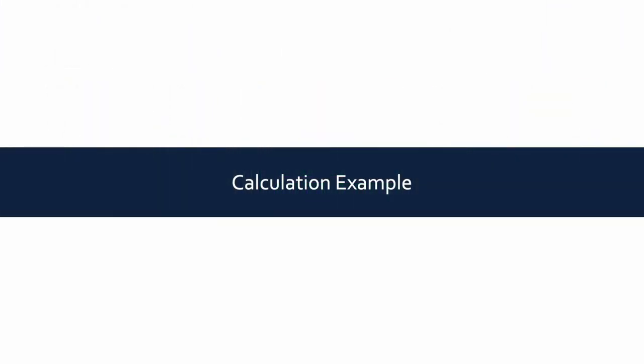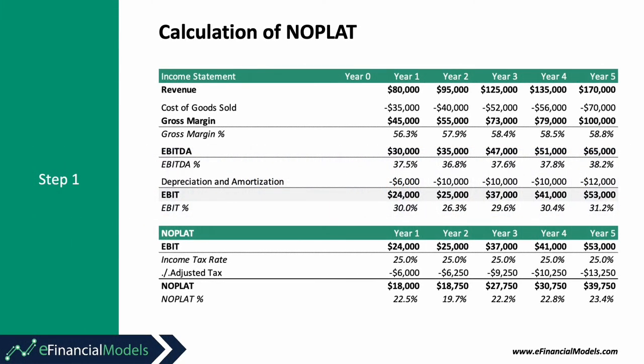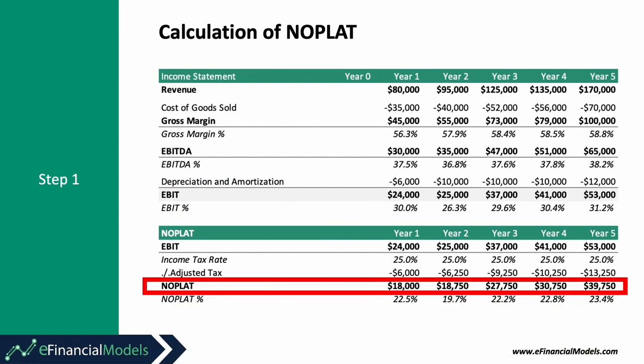Let's look at an illustrative calculation example taken from a company's income statement and balance sheet to better understand how to calculate and use ROIC. First, we need to calculate NOPLAT. For this, we need to extract EBIT from the income statement and deduct pro forma income taxes using the income tax rate. This gives us NOPLAT, which reflects a company's operating profits after deducting taxes but without interest expenses.